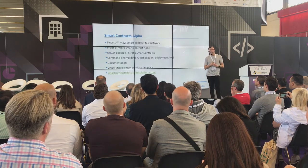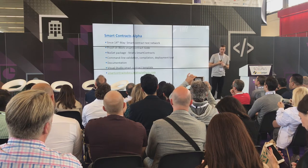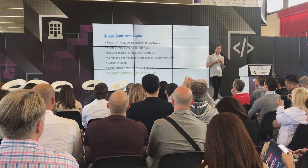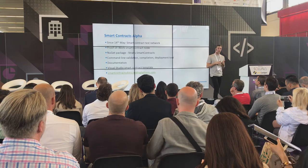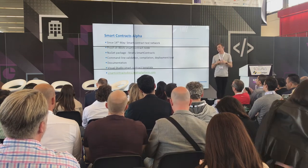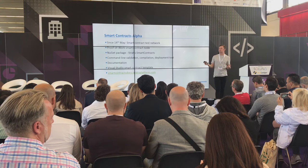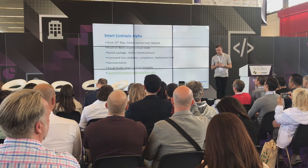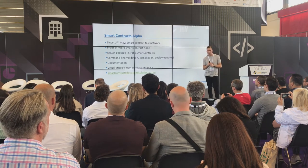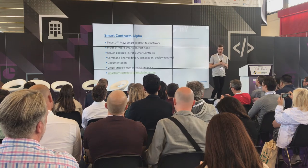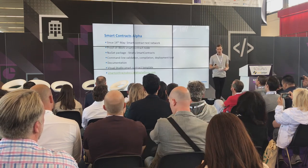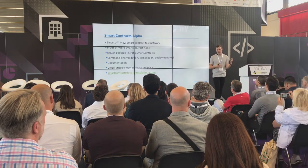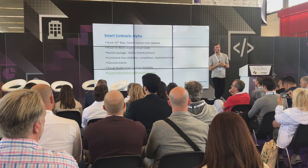Those were the problems we had to solve, and this got us to a point where we were able to release our Smart Contracts Alpha. We released a bunch of things around this time: firstly, a proof-of-work Smart Contracts node; a NuGet package — Stratis.SmartContracts — which anyone can download inside Visual Studio and use to build smart contracts in C# really easily; a command line validation, compilation, and deployment tool; a range of documentation; and a Smart Contract Template for Visual Studio.